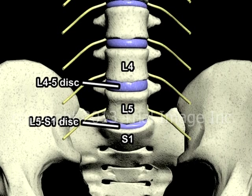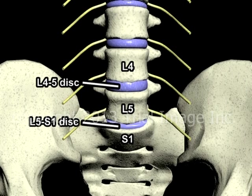The intervertebral discs are made of a firm but flexible material that act as shock absorbers between the spinal vertebra. Situated as they are at the bottom of the spine, the L4, L5, and S1 vertebra and their accompanying discs bear considerable stress as a result of the weight and movement of the upper body, and as a result, have a greater frequency of injury and degenerative change than their counterparts higher up in the spine, the exception to this rule being the vertebra of the neck.